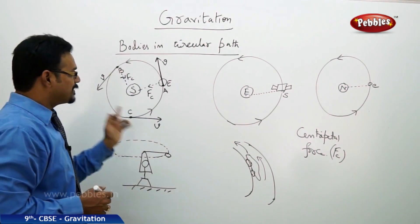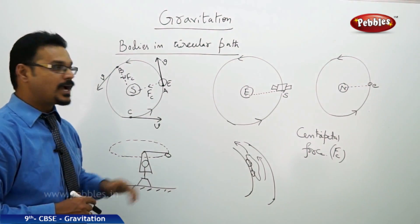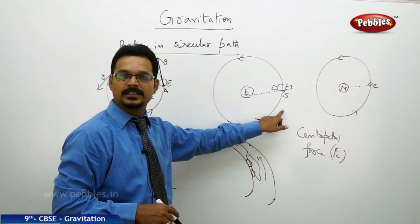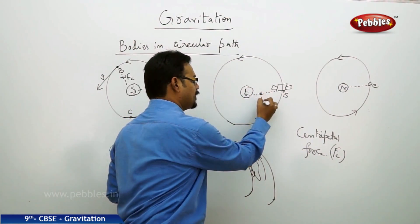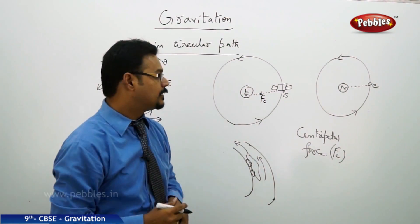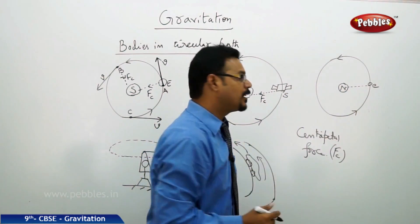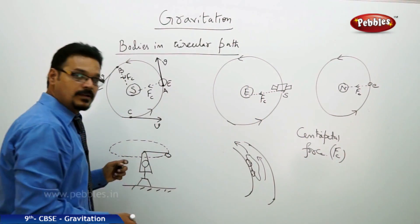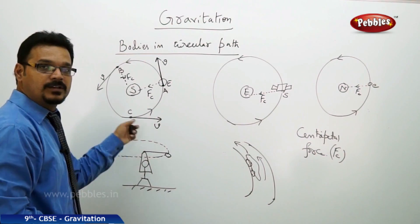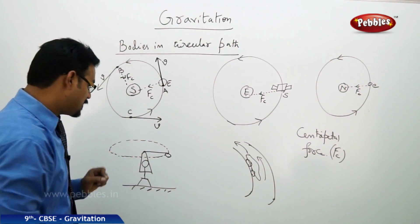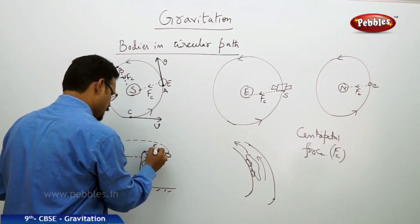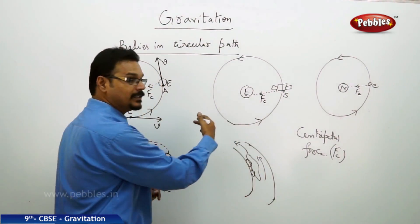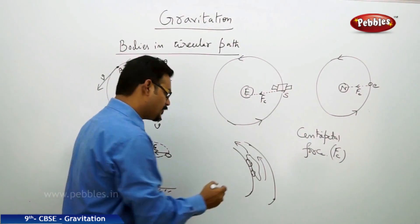This is applicable for all examples: the satellite is in a circular path because of the centripetal force by the Earth; the electron is in the circular path because of the centripetal force by the nucleus; the stone tied to a string describes a circular path because of centripetal force FC; and the car taking a circular turn on the road is because of the centripetal force.